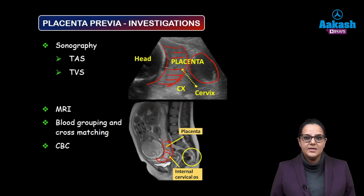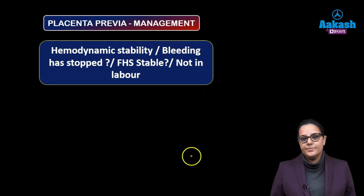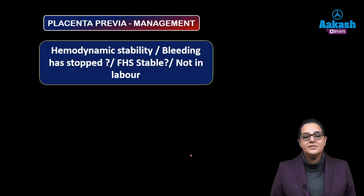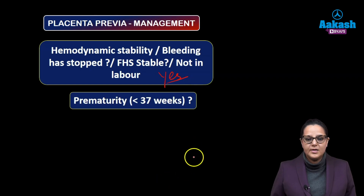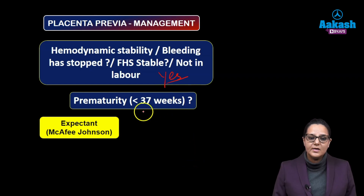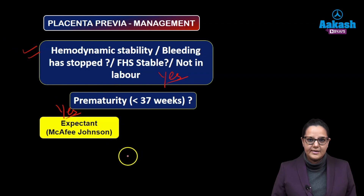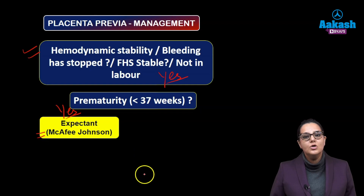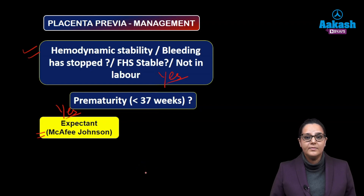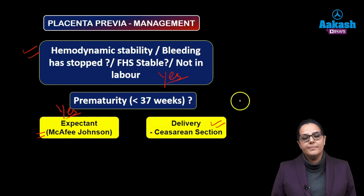Other tests we do are CBC and cross-matching of the blood. For management, we ask certain questions: Is the patient hemodynamically stable? Has the bleeding stopped? Is the fetal heart sound stable? Is the patient in labor or not? If the answer to all of these is yes, then the second question is whether there is prematurity — is the baby less than 37 weeks? If the answer is yes — the baby is premature and the patient is stable — then we go for expectant management, also known as the McCaffey-Johnson protocol. We keep the blood cross-matched, send her CBC, give her steroids because she can go into labor anytime, and observe the patient. If the answer to all of those questions is no, we deliver the patient by caesarean section.